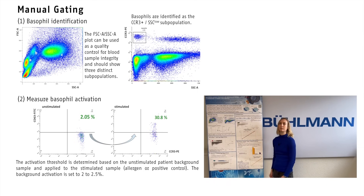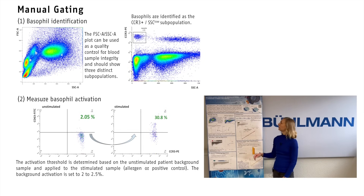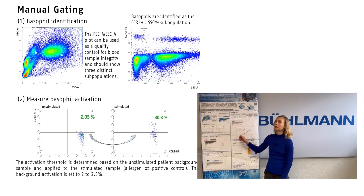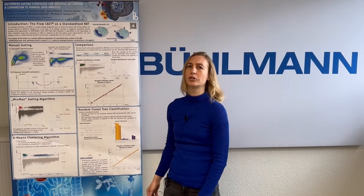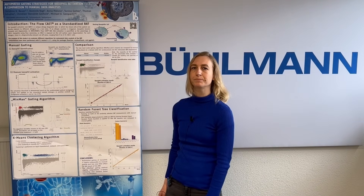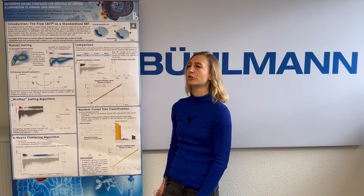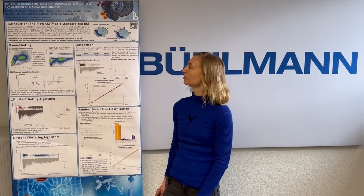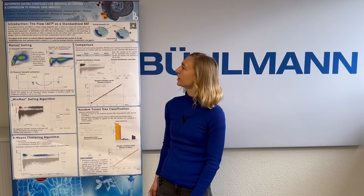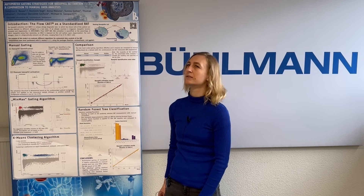While the latter can be very challenging for a human, it is only one line of code at a computer. However, the first part is computationally more challenging. For this reason, we tested three different approaches to automize the identification of basophils in the flow cytometry data.